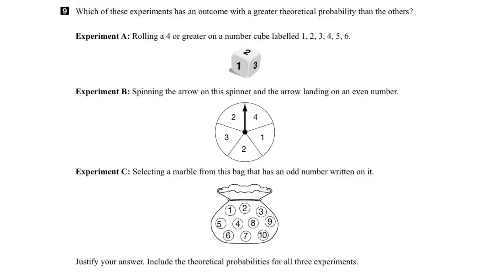In question 9, we have to determine which of these experiments A, B, or C is more likely to happen. Let's figure out the theoretical probability for each and compare them.